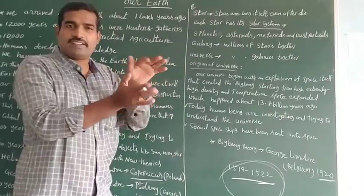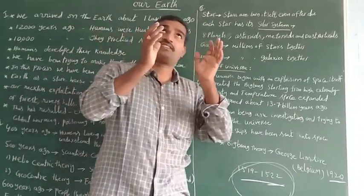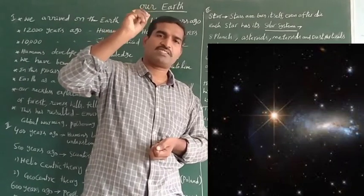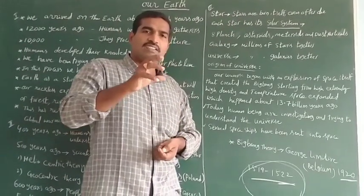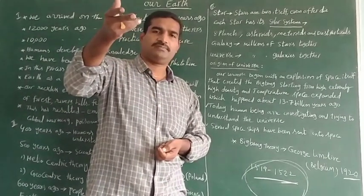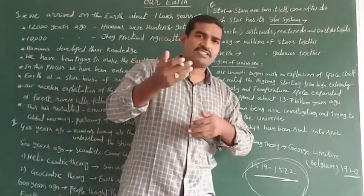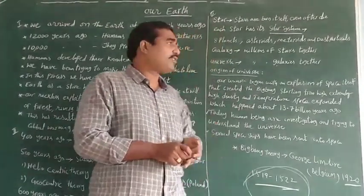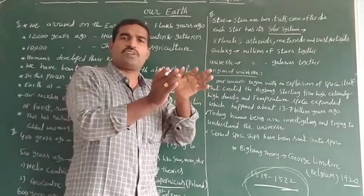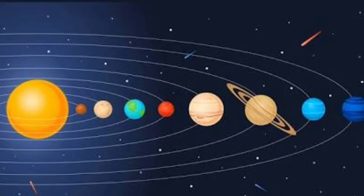Now we will discuss Universe-related matters. Star — if you observe in the night time, there are a number of shining objects in space. What is a star? Stars can be born and also die. What is our nearest star? The Sun is the nearest star to our Earth. Each star has its own solar system. What is a solar system? Eight planets, asteroids, meteoroids, and other dusty particles — all together are called a solar system.